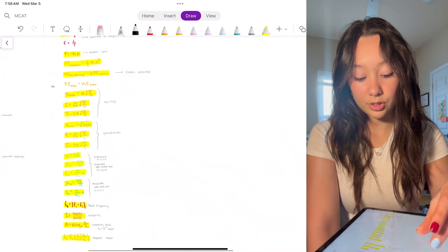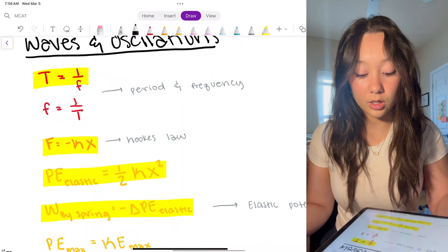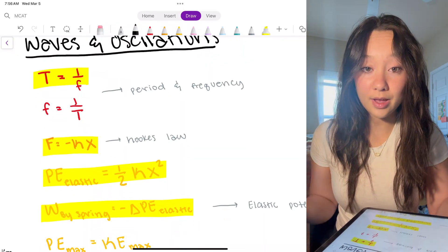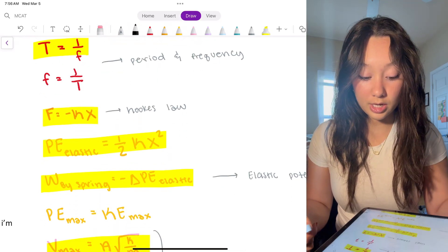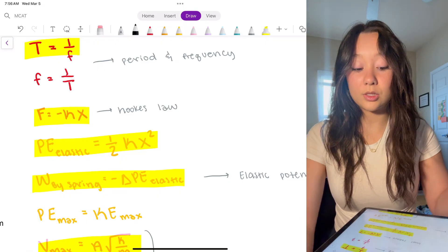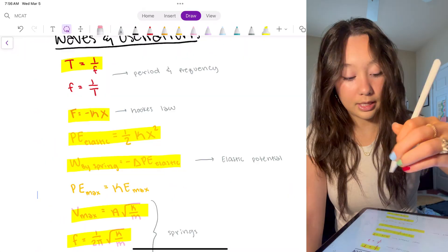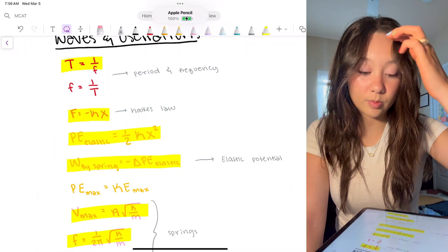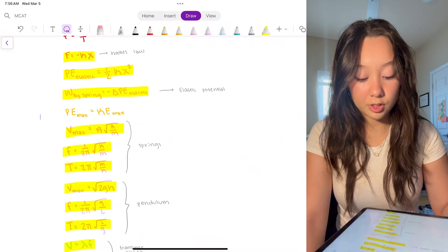Okay, waves and oscillations. This one's a little long. Period and frequency, they are inverses of one another. Hooke's Law, F equals negative KX. Potential energy of an elastic spring is one-half KX squared. I memorized this one because it's very similar to one-half MV squared for kinetic energy. Elastic potential, which is going to be similar to the work energy theorem that we did in mechanics.